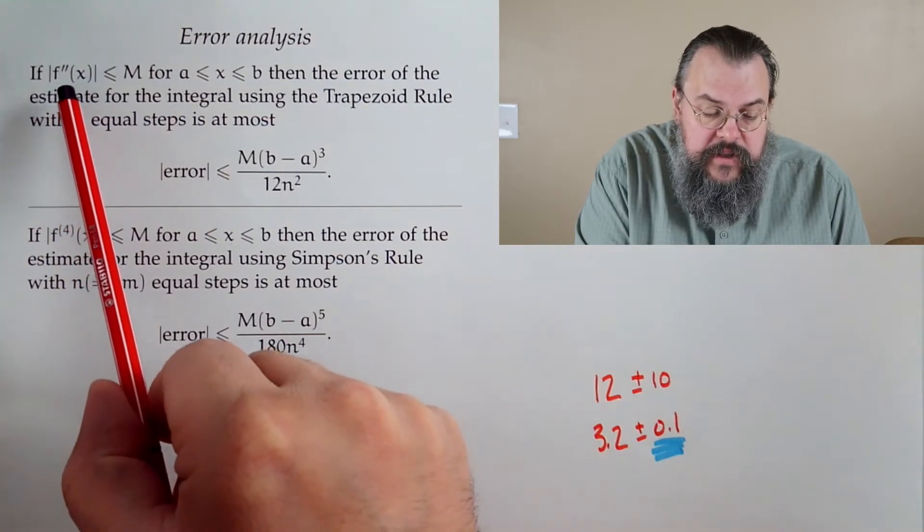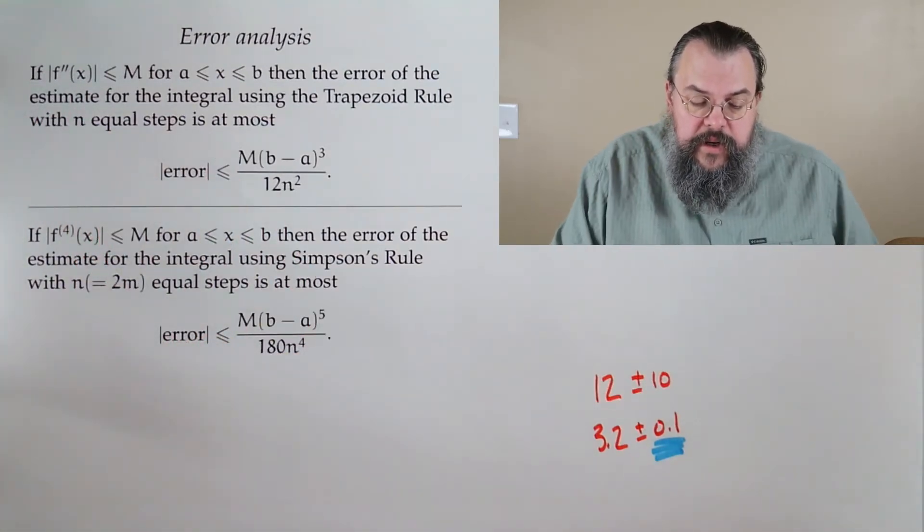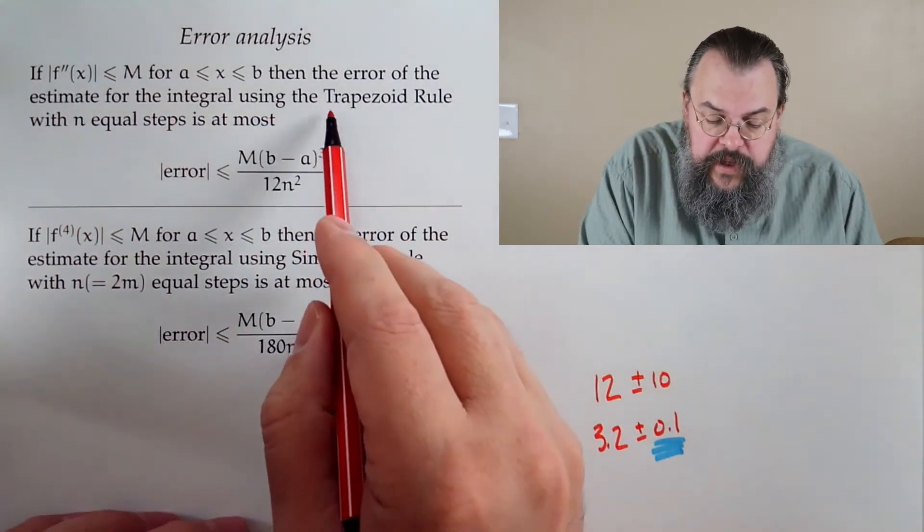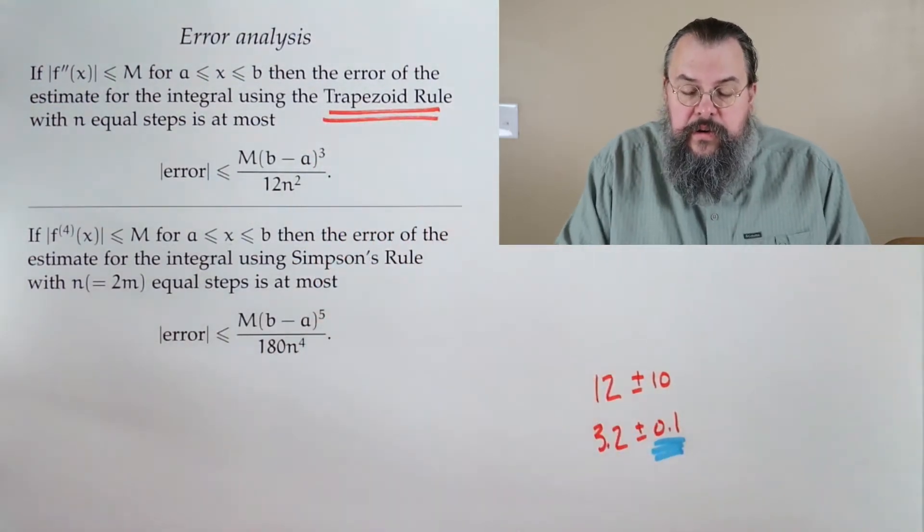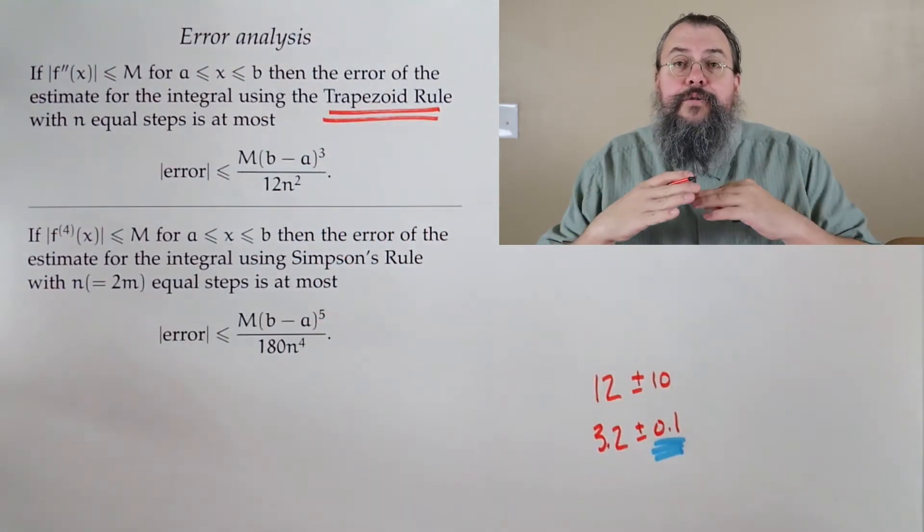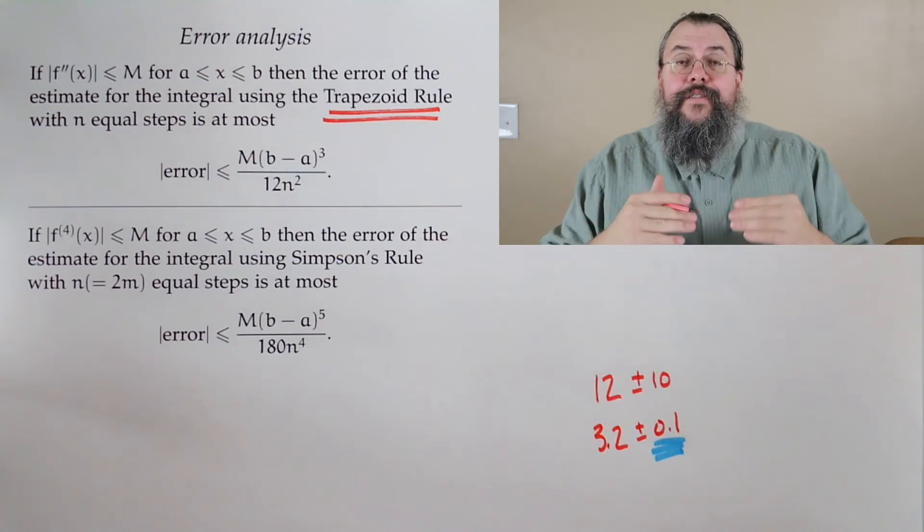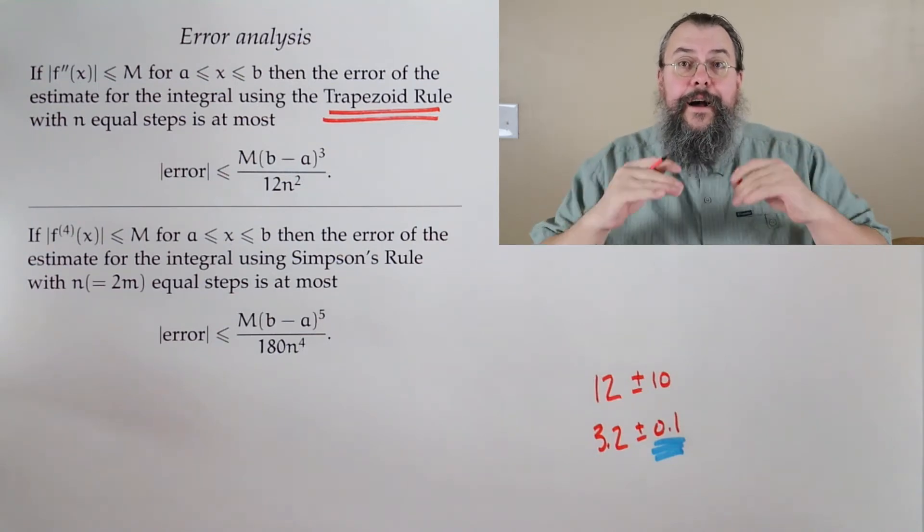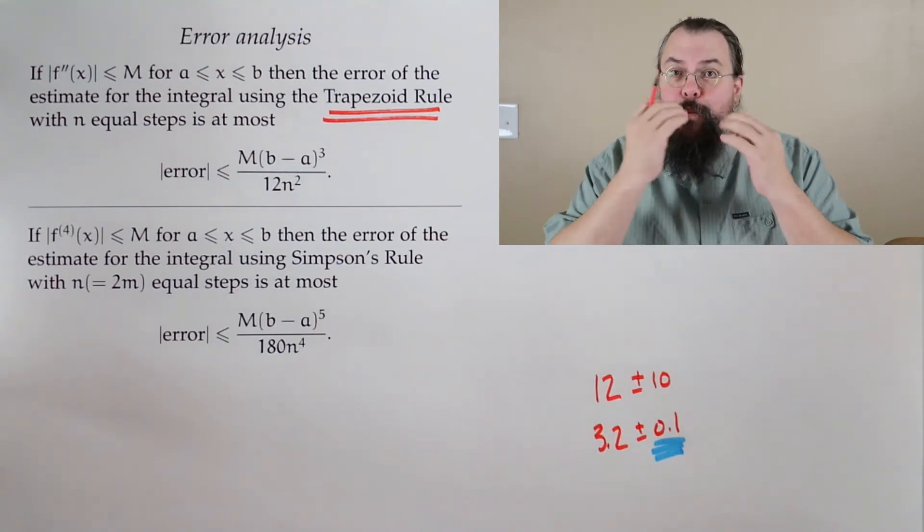So in particular, let's start with the trapezoid rule. And the trapezoid rule, remember it says, look, I'm great at estimating lines. So anything that's like a line, I'm perfect. Trapezoid, muah, beautiful.